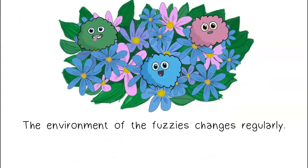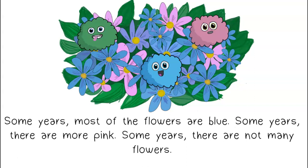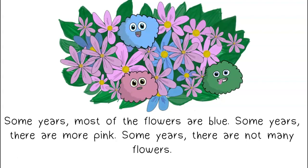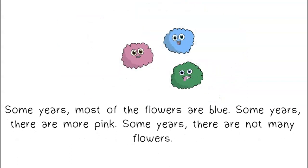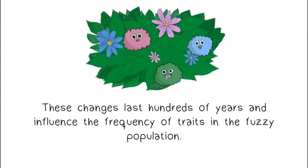The environment of the fuzzies changes regularly. Some years, most of the flowers are blue. Some years, there are more pink. And in some years, there are not many flowers. These changes last hundreds of years and influence the frequency of traits in the fuzzy population.